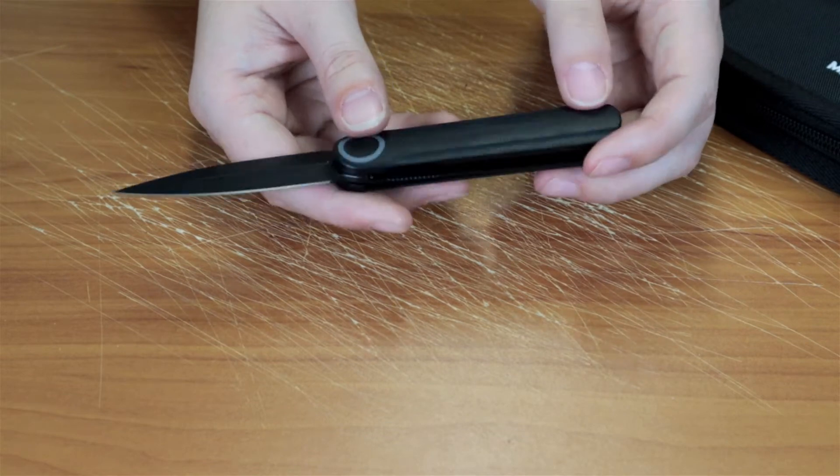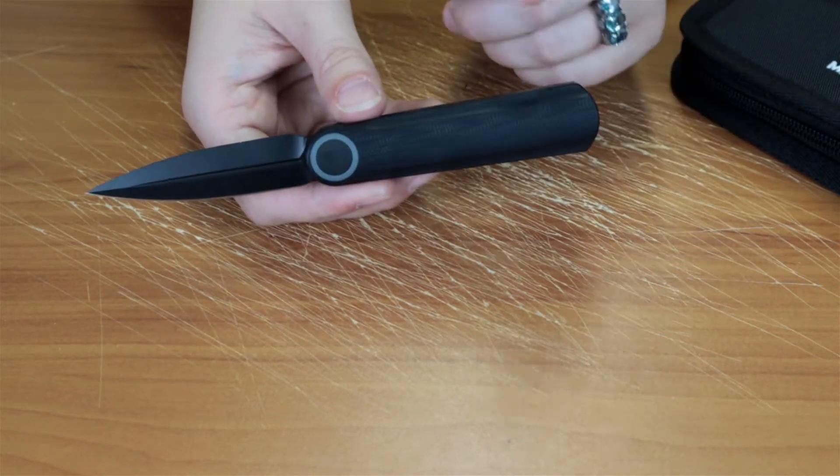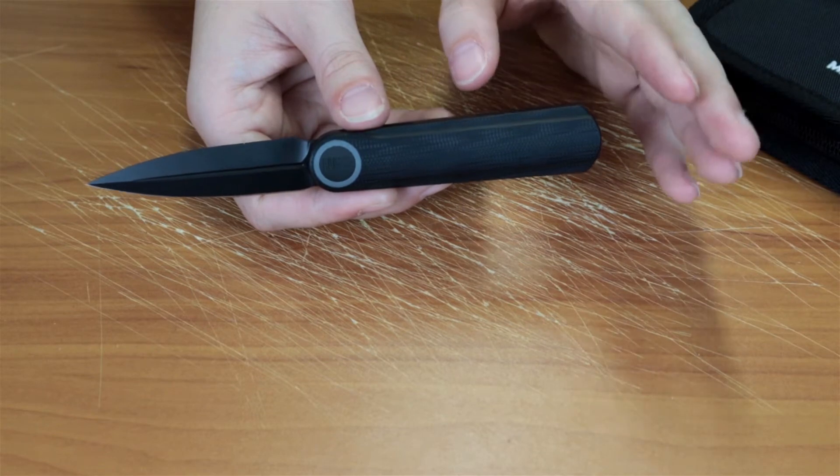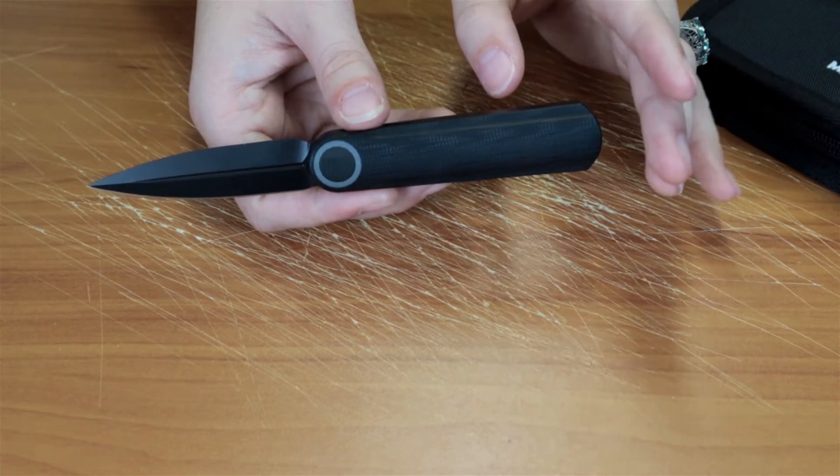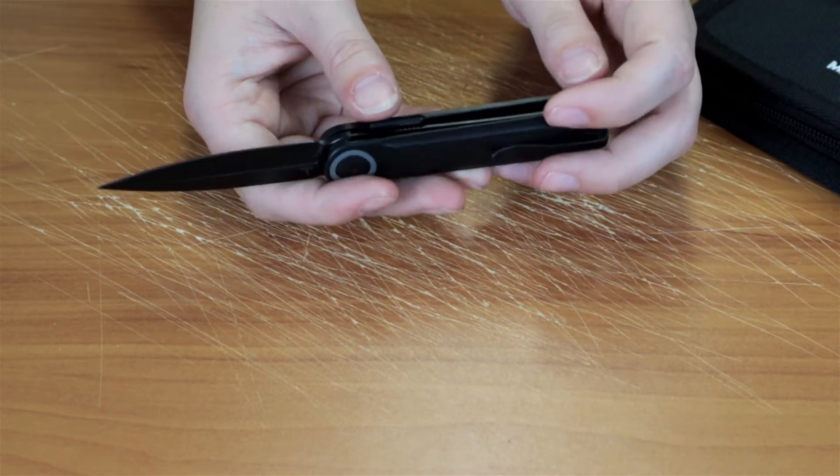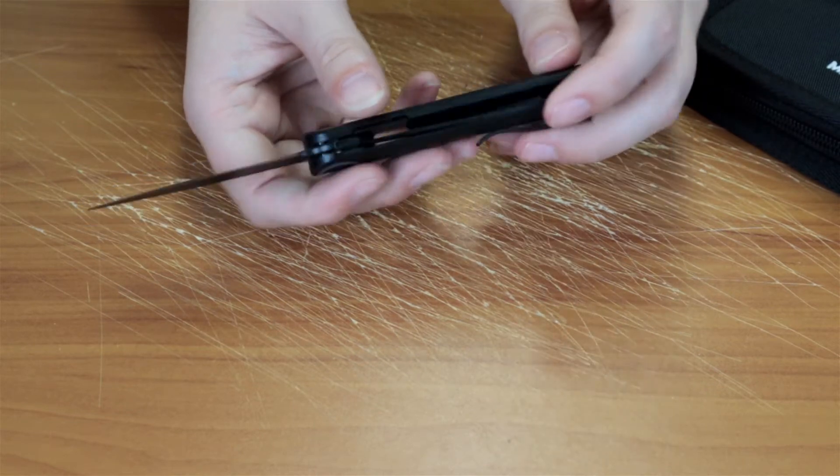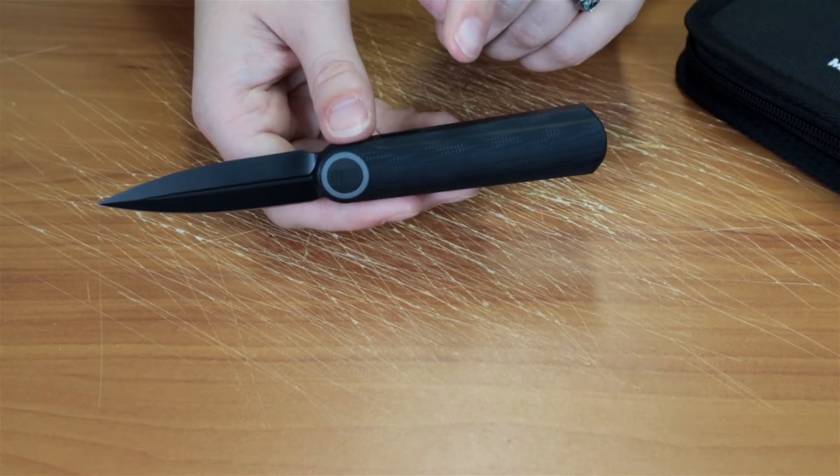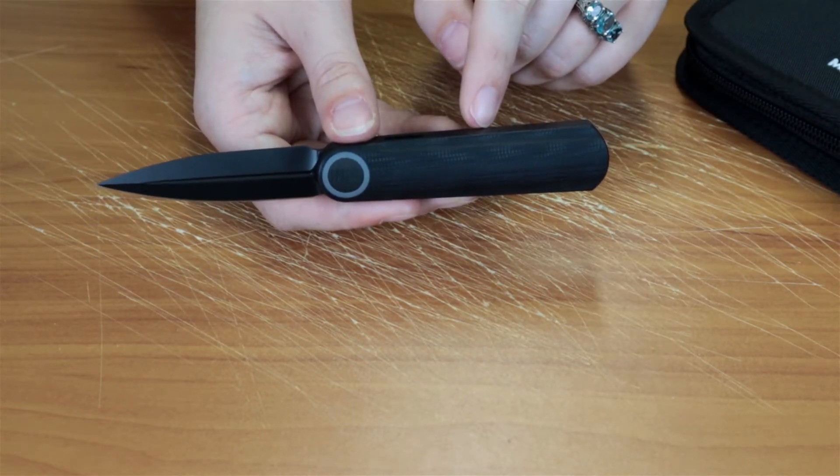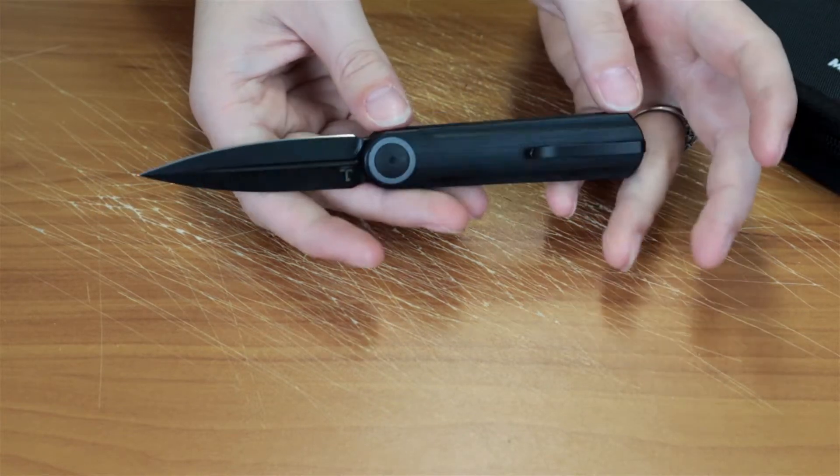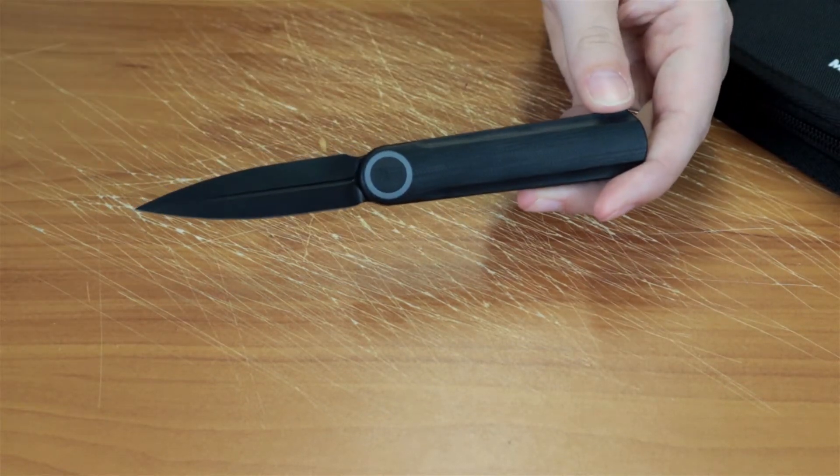Much like the Civivi Lumi, which if you haven't seen it, you should check it out. It too is a front flipper and it's very similar in size and design, which makes sense because both the Civivi Lumi and this one, the WE Etalon, were both designed by Justin Lundquist. So he must have a thing for front flippers.